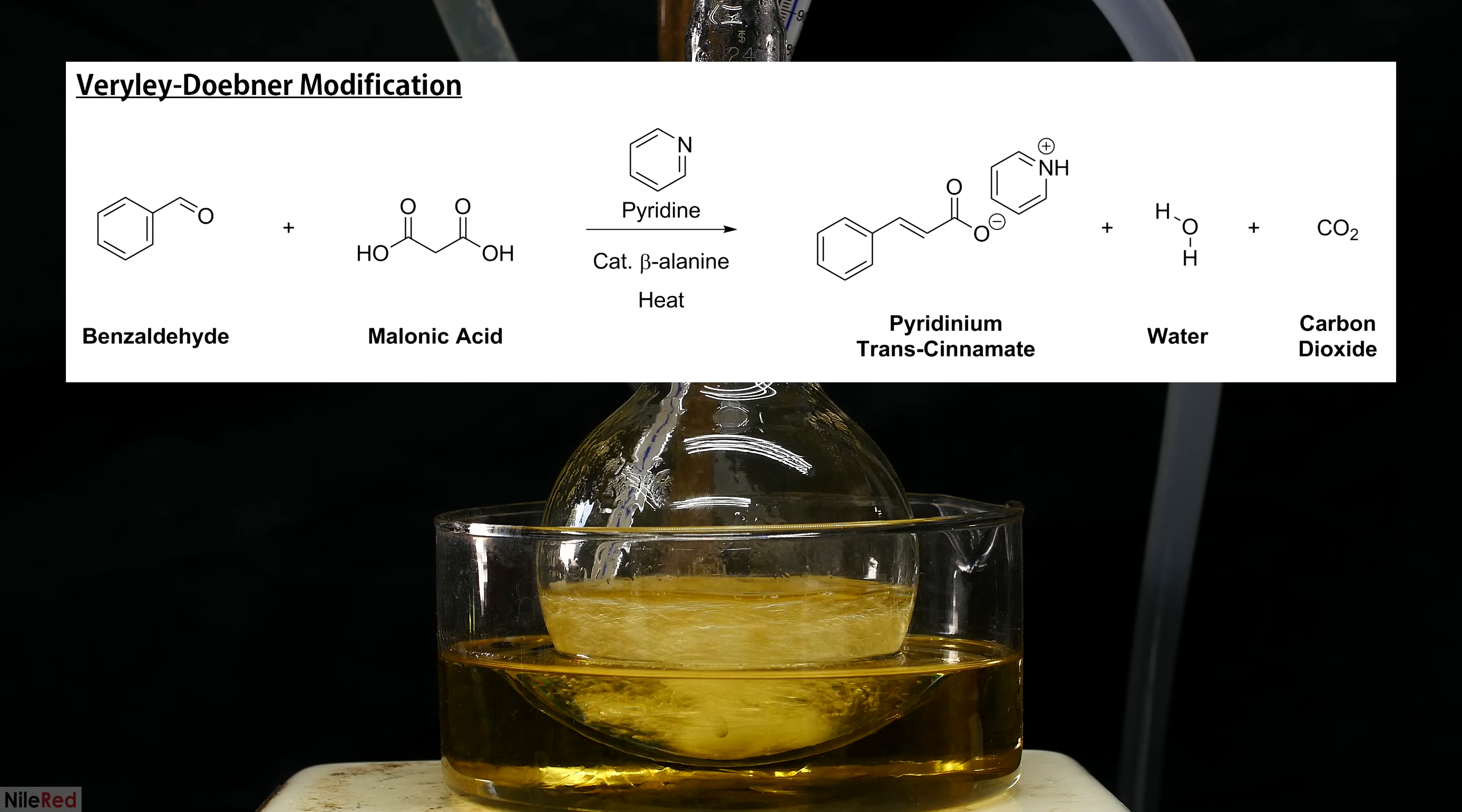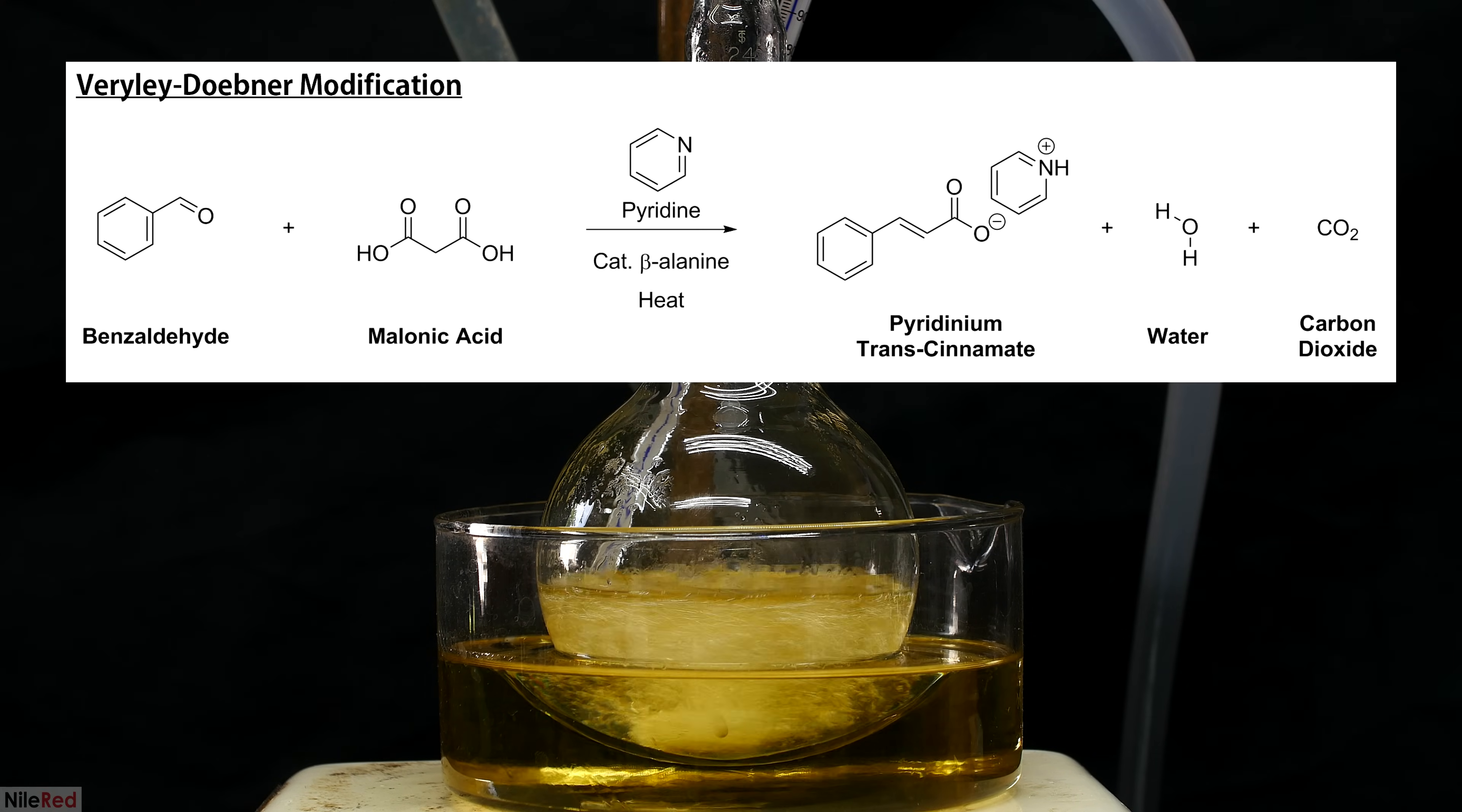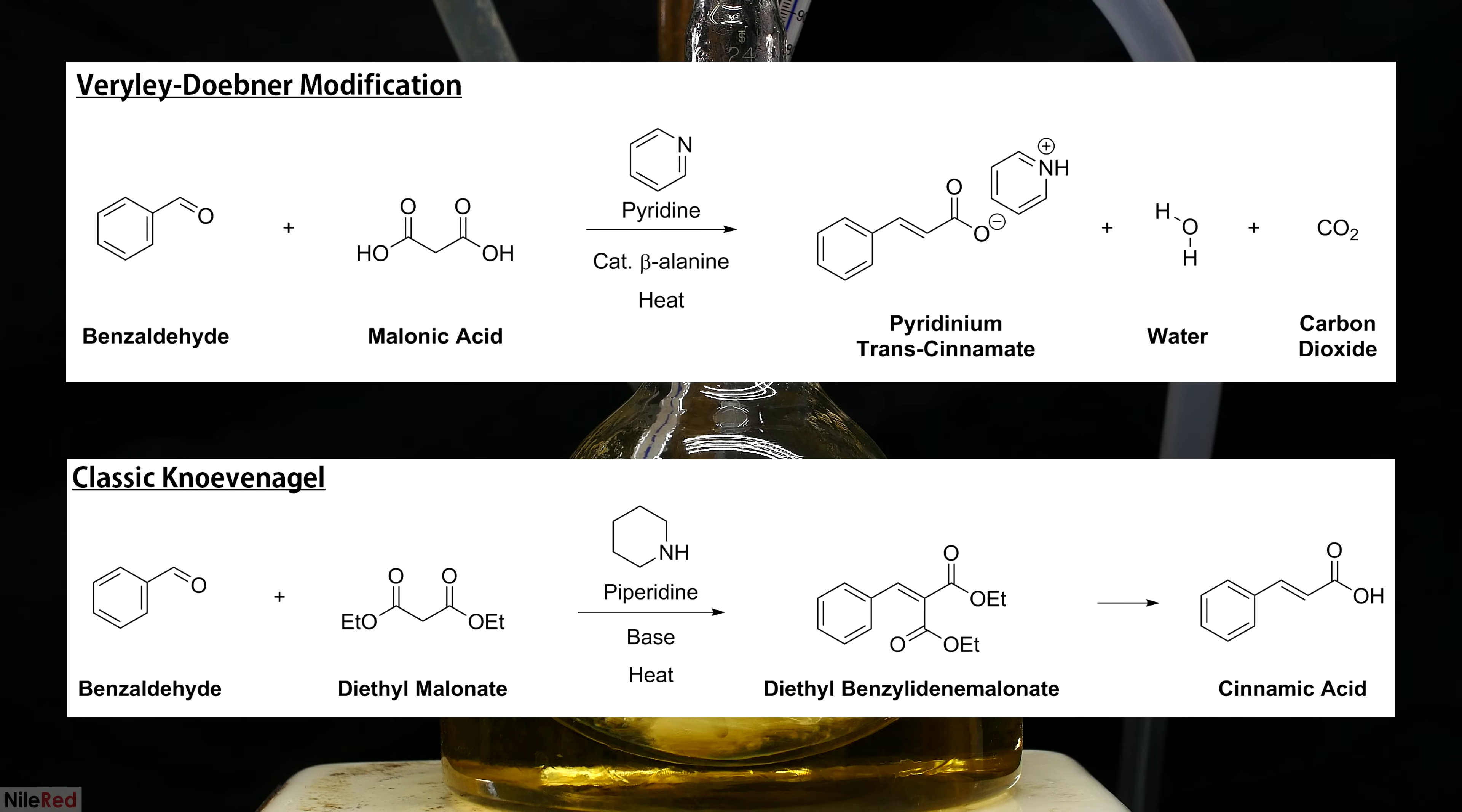Pyridine is the solvent and acts as a base catalyst, and the beta-alanine that we added acts as a co-catalyst. In the normal and classic Knoevenagel condensation, we'd use diethylmalonate instead of malonic acid, piperidine instead of pyridine, and we'd form a diester as a product instead. In a second step, this diester can be hydrolyzed and decarboxylated to form the same product as the Perkin-Döbner modification.